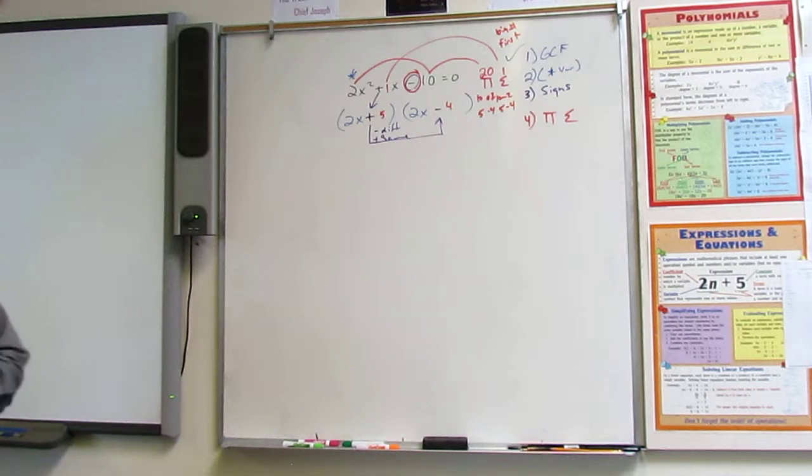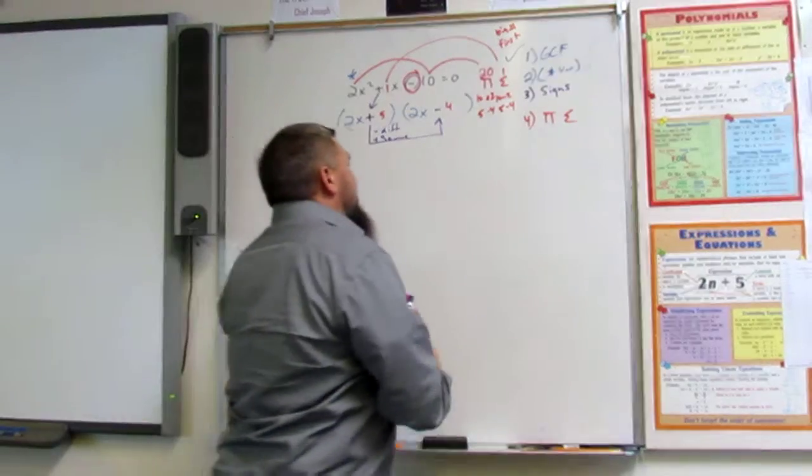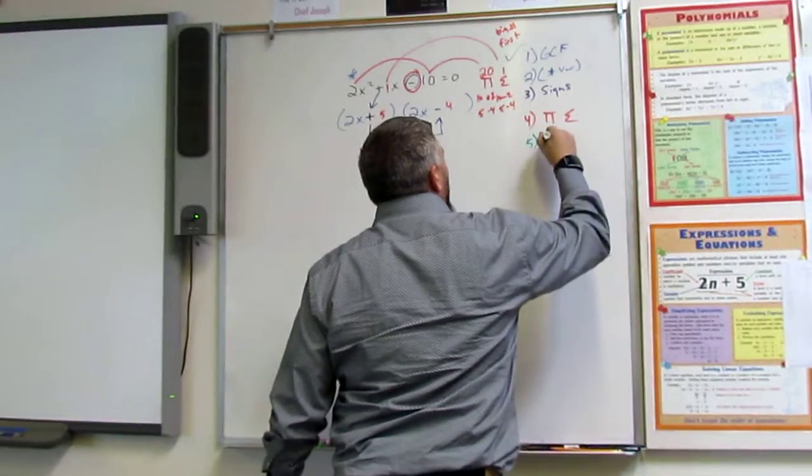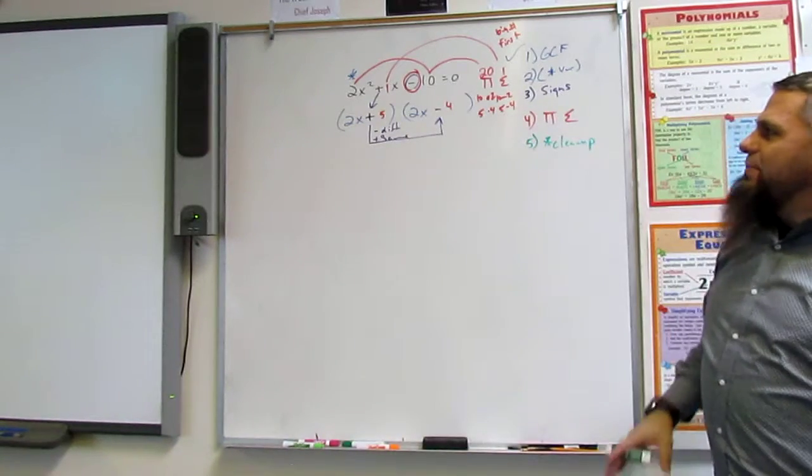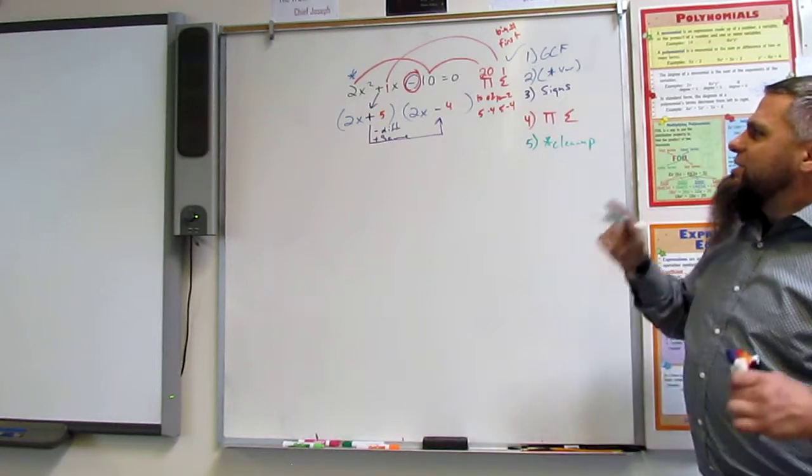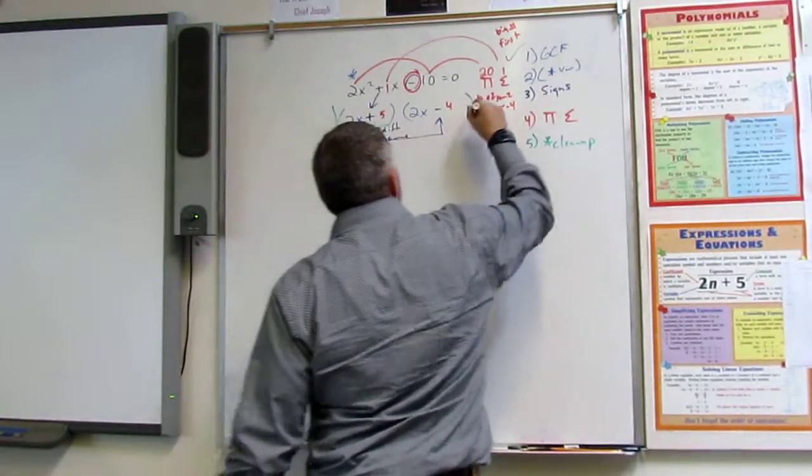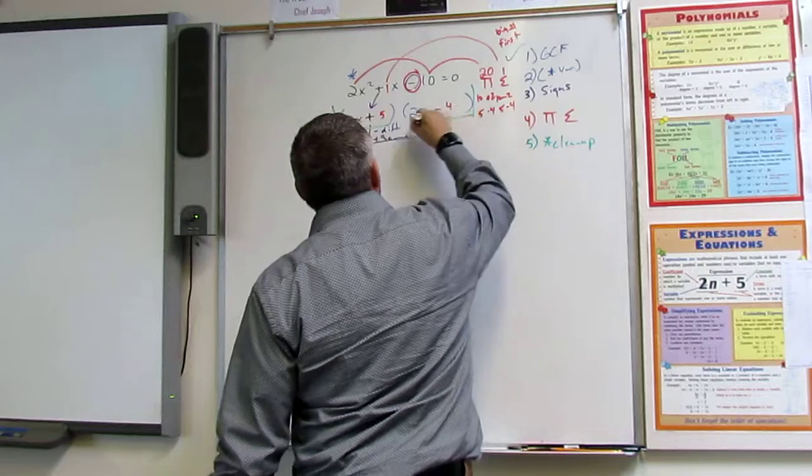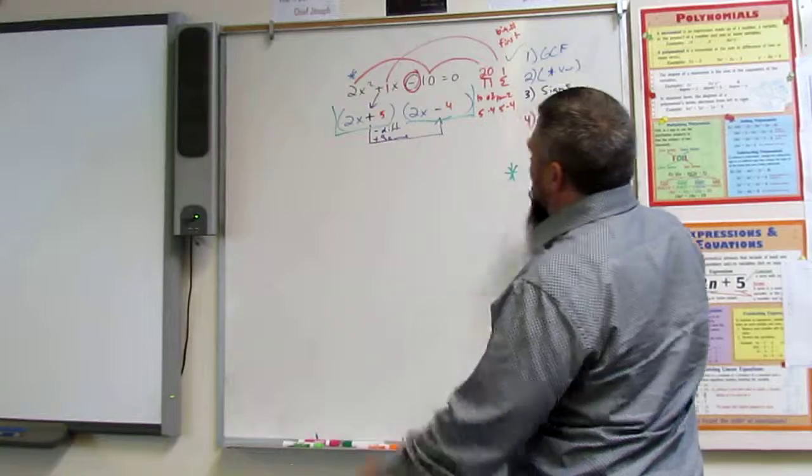Now, we got one more step though, right? What is it? Clean up. We got the star clean up. Okay? That means I need to find some number that goes into this and this. A product that goes into both of these. Okay?